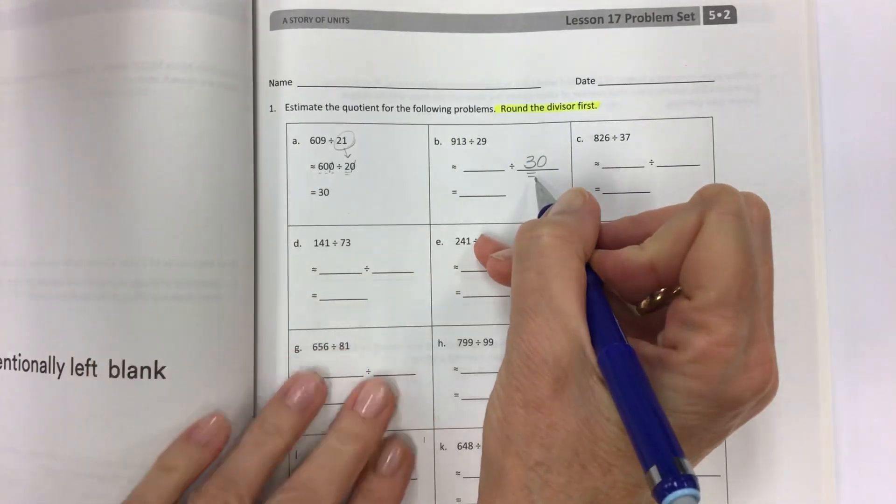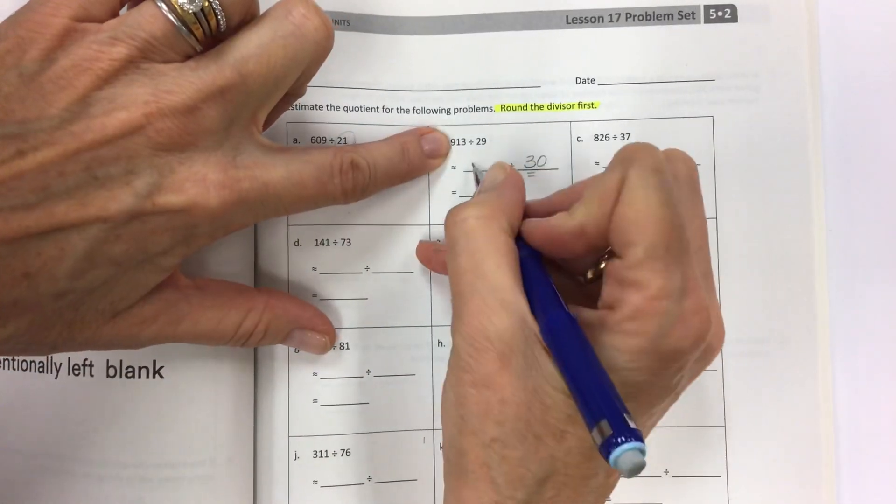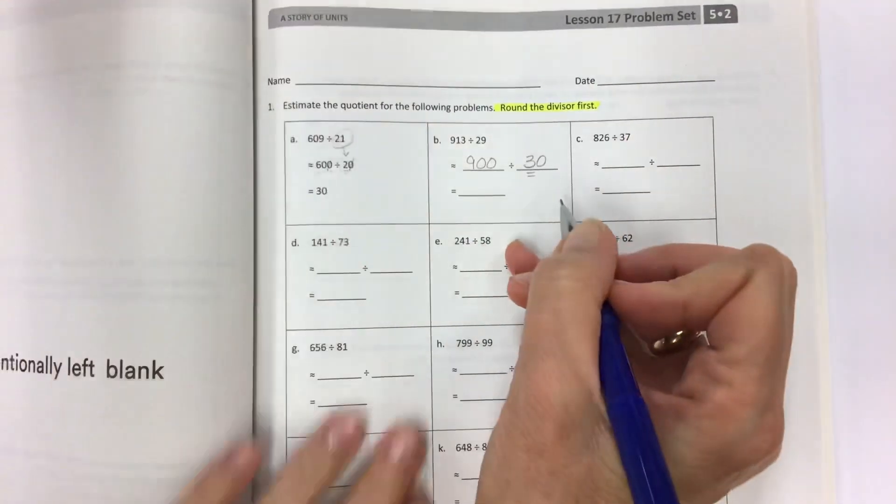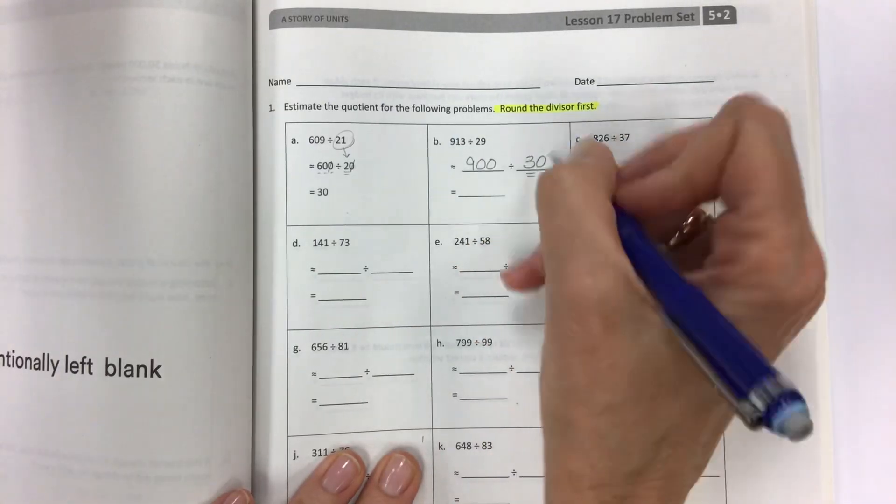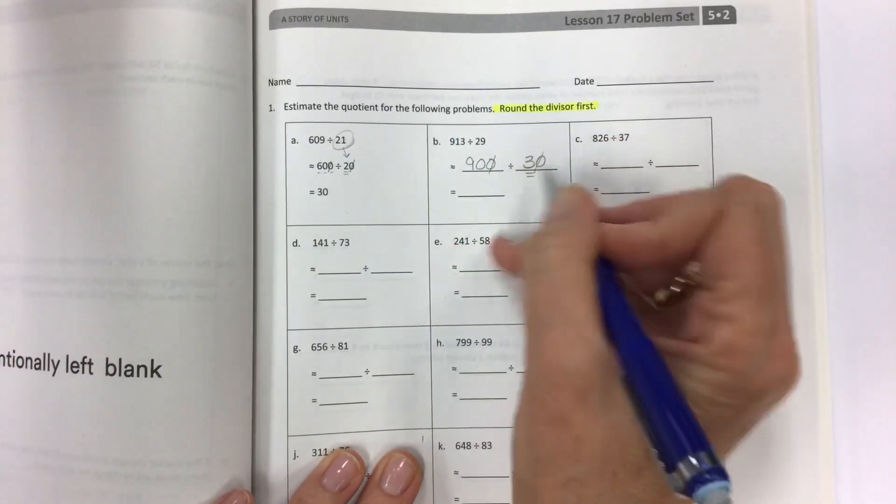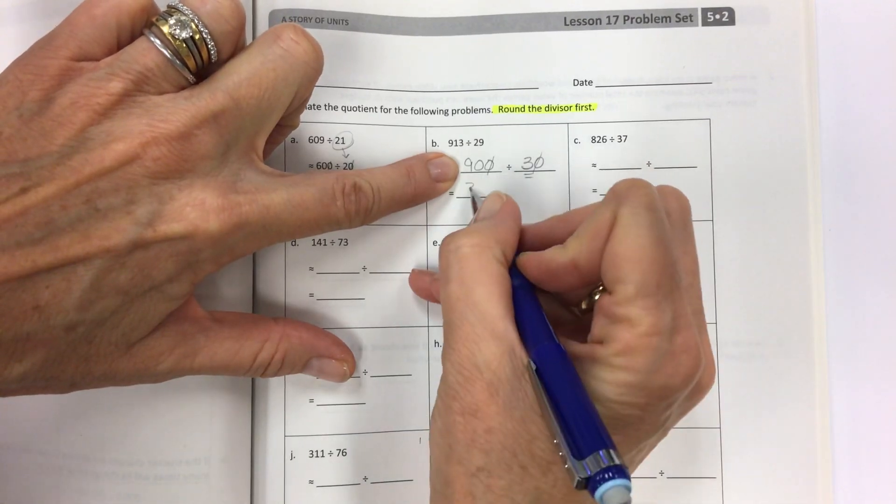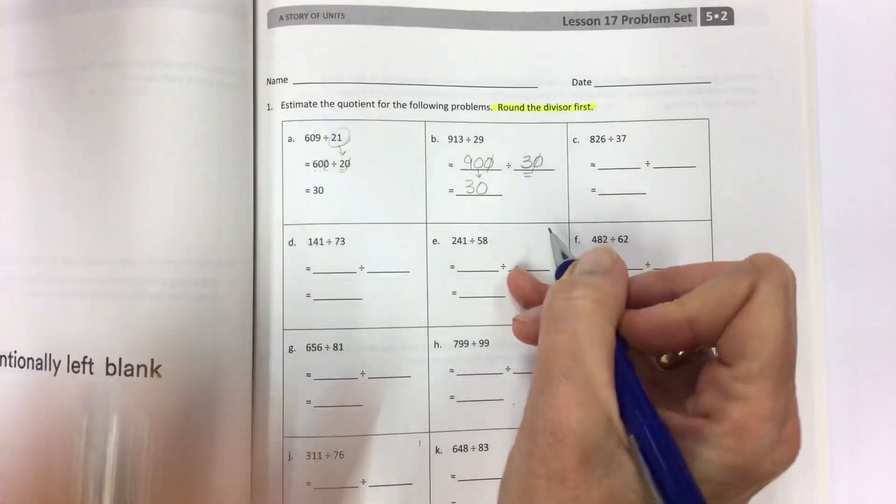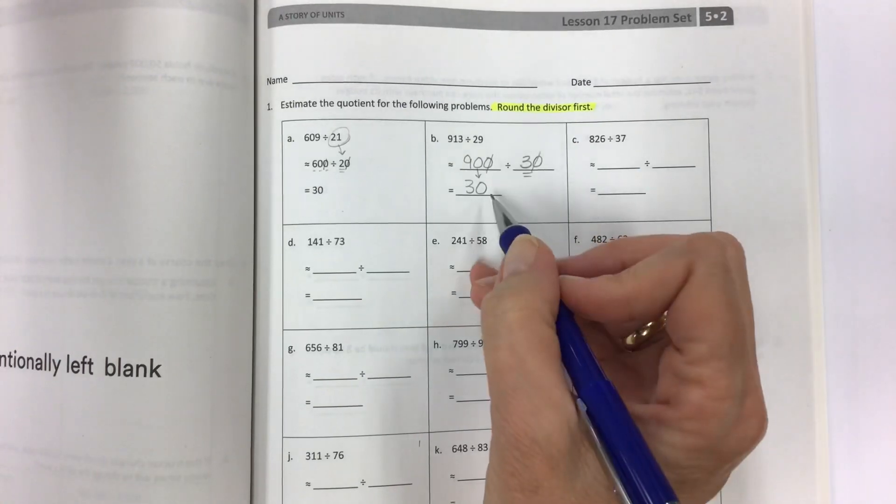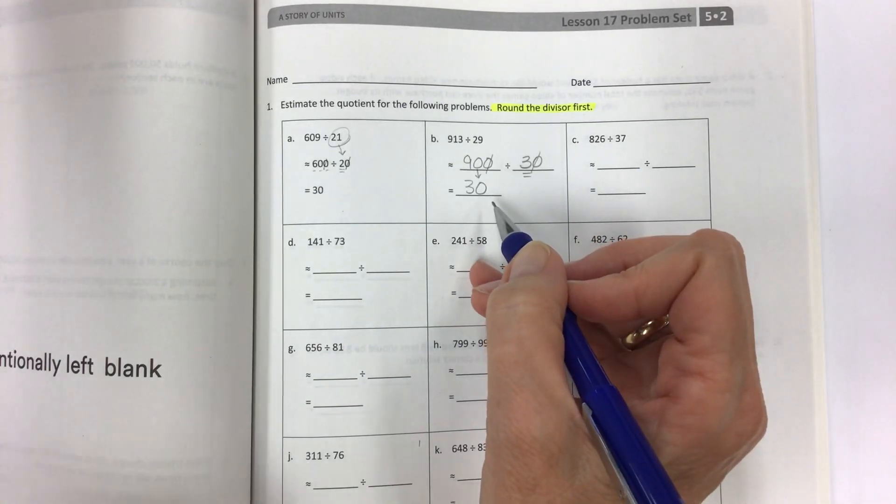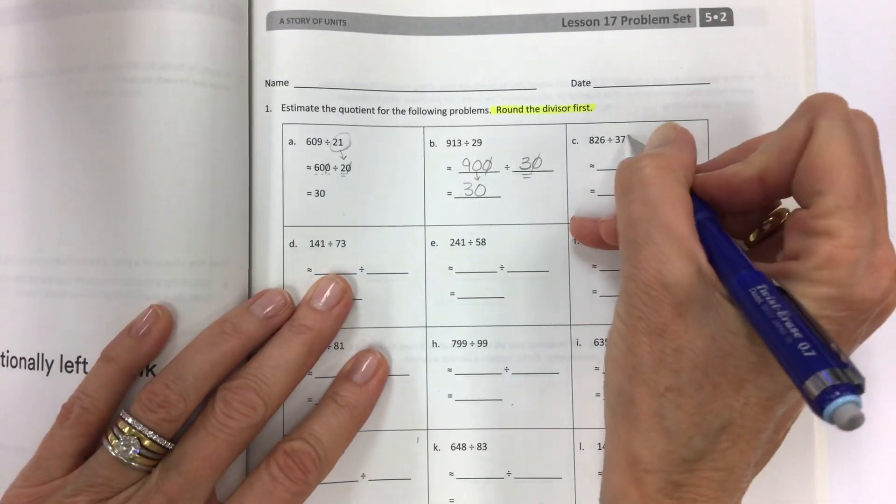Round the divisor first. 29 to 30. I need multiples of three. This could be rounded to 900. 900 divided by 30. Divide by 10. Now divide by three. 9 divided by 3 is 3. And we have a zero that comes down. So see how easy that is? And it goes really, really fast.